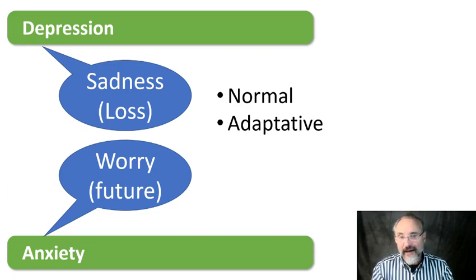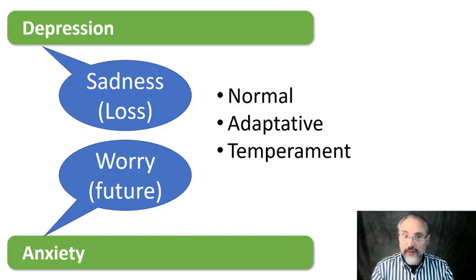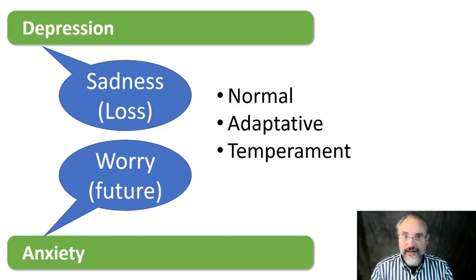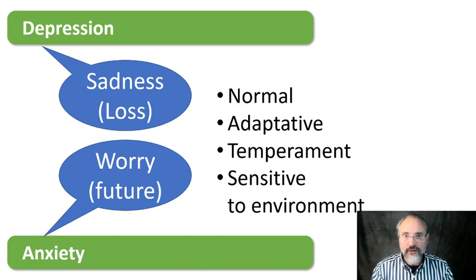People who don't experience sadness or worry don't do very well in life. These feelings are to do with temperament — some people experience a lot of sadness and worry more than others. People who have a lot of sadness and anxiety, as long as they don't develop a depressive or anxiety disorder, tend to do very well because they're very careful not to lose things and very careful to plan for the future. It's a temperamental trait that makes you sensitive to your environment.